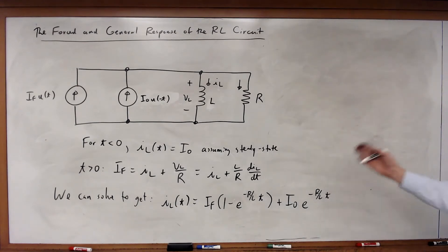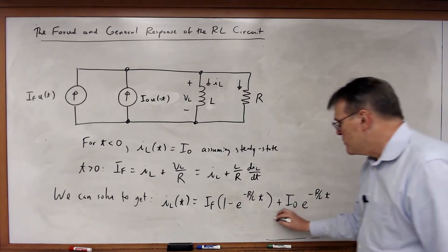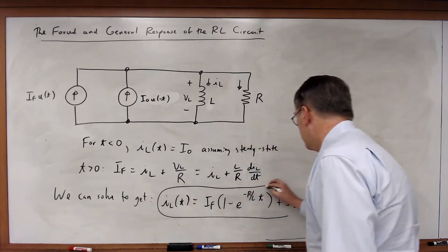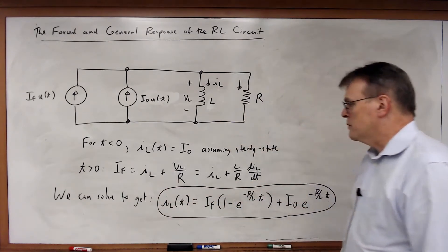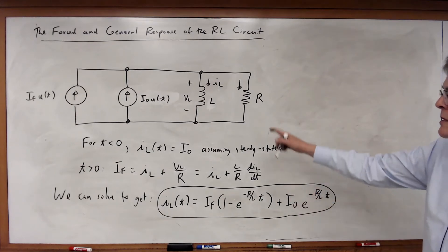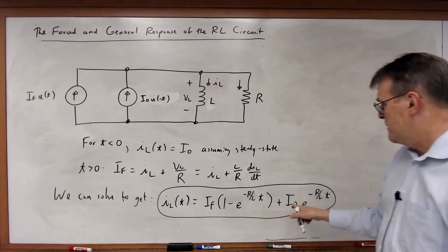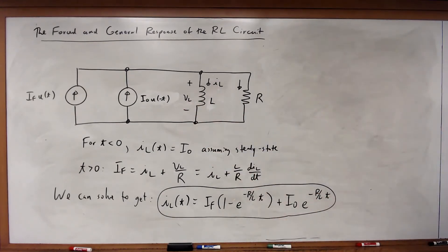And so, once again, I have a general solution for the current through the inductor. Remember, the initial condition persists across the switching event, so that's how I know that I0 is valid.